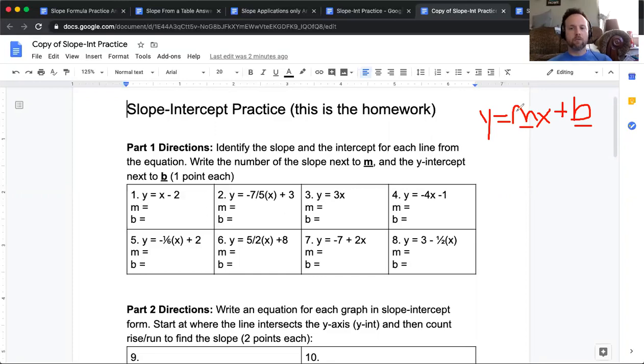So our slope is always going to be written as mx. It's going to be, depending on what value, what number we associate with, it's going to be some number, the coefficient multiplied by x. So it'll be something times x, like 3 times 3x, or 7 fifths x, or 92 billion x.